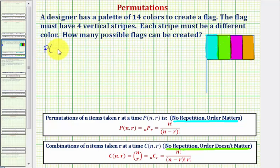So if we have 14 permute four, looking at our formula here, this means N equals 14 and R equals four.